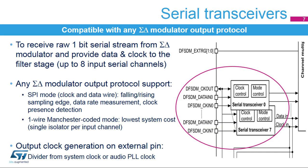Serial transceivers provide the connection to the external sigma-delta modulator. SPI mode works up to 20 MHz, or the DF-SDM clock divided by 4. There are configurable options including sampling edge selection, data rate measurement, and clock presence monitoring. One-wire Manchester-coded mode, where clock is recovered from the data, works up to 10 MHz, or DF-SDM clock divided by 6. A synchronization detection feature is also available in Manchester mode. Manchester mode also offers the lowest system cost in case of optical isolation of the sigma-delta modulator — then only one single isolator per input channel is necessary.